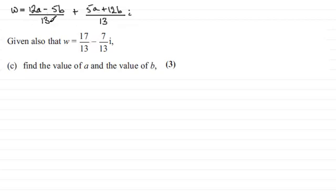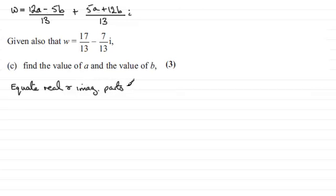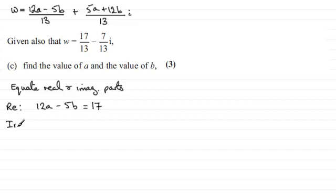I can see that both of the parts here are over 13, so it must be that the tops must be equal to the 17 and the minus 7. So I'm just going to write a note here that we equate the real and imaginary parts. Starting with the real parts, we've got 12a minus 5b must match up with the 17, so 12a minus 5b equals 17. And for the imaginary parts, 5a plus 12b must be equal to minus 7, so 5a plus 12b equals minus 7.